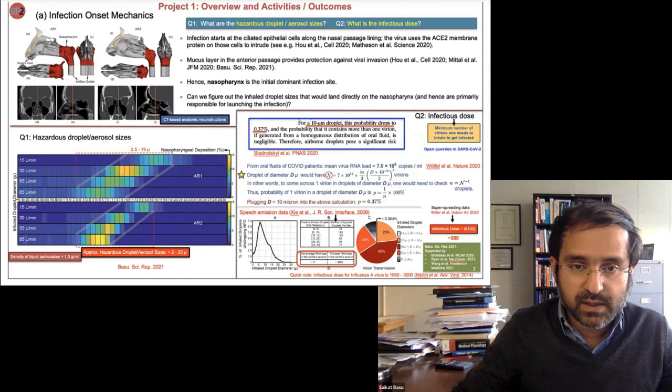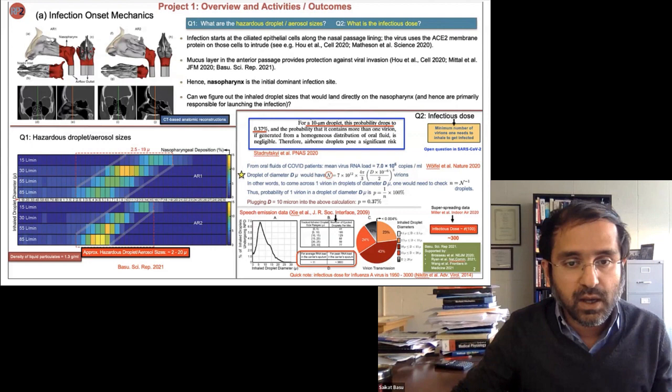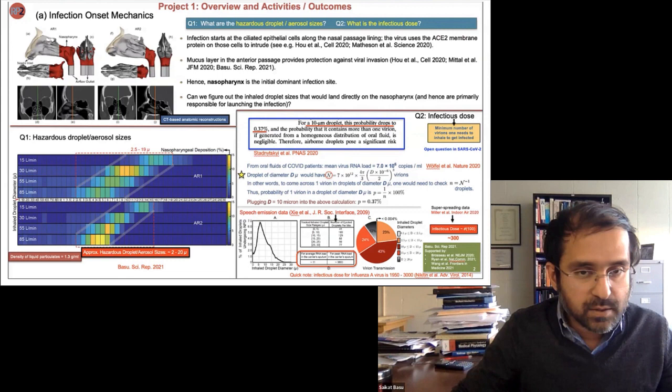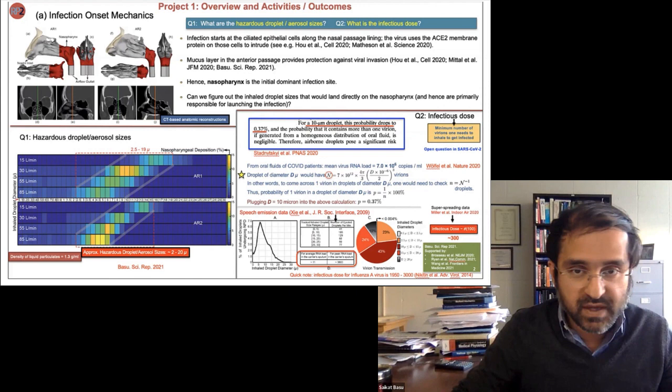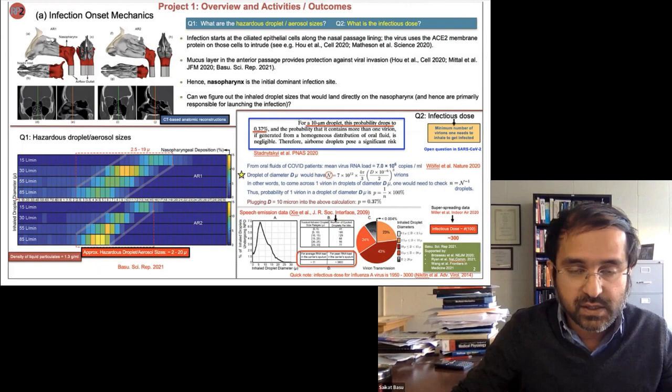We know that infection starts at the upper airway, and that the nasal lining contains ciliated epithelial cells with ACE2 receptors to which the virus binds to intrude into cells. The anterior nasal cavity has a relatively thick mucus layer providing some protection against viral invasion. It has been conjectured that the nasopharynx — where the two sides of the airway converge forming the upper part of the pharynx — is the first dominant infection site. To address the first question, I simulated which droplets and aerosols would land directly over this initial infection zone during inhalation.